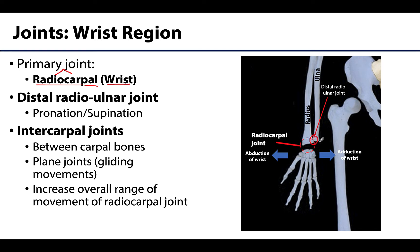The distal radioulnar joint is the most distal of the three articulations between the radius and the ulna. We discussed the proximal radioulnar joint when discussing the elbow region; an interosseous membrane connects the shafts as the second joint. The distal radioulnar joint partners with the others, particularly the proximal radioulnar joint, to allow pronation and supination.